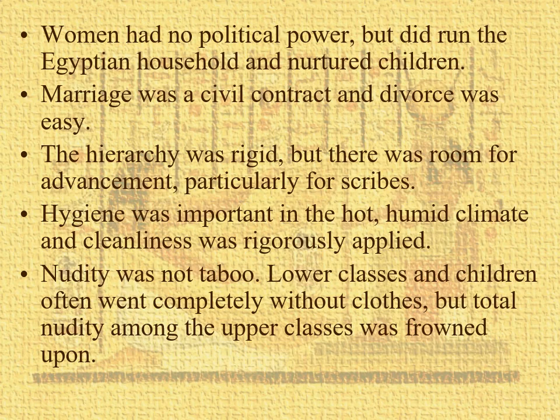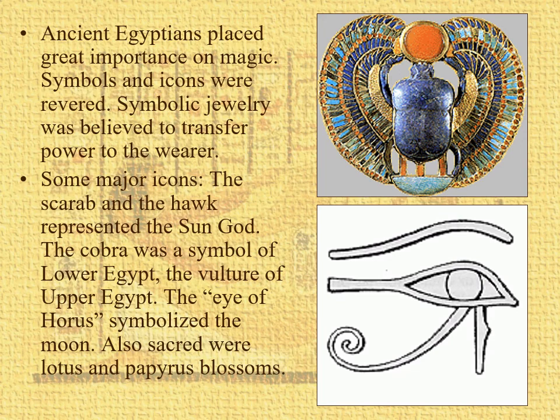Nudity was not a taboo. It was not uncommon for lower classes and children to be completely naked. Among the upper classes and scribes, not so much — the more power and prestige you had, the more clothes you had on. But if you're a guy going out to do a blue-collar job, you don't have anything on, and that's just fine. Very big on iconography, which you'll see in some of the clothes. Symbolic jewelry was believed to transfer power to the wearer: the scarab, the hawk representing the sun god Ra, the cobra of lower Egypt, the vulture of upper Egypt, and the eye of Horus symbolizing the moon.